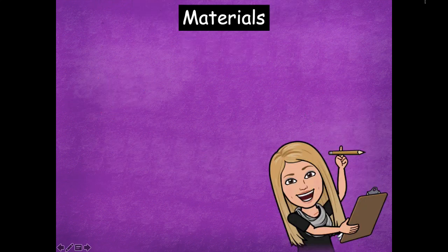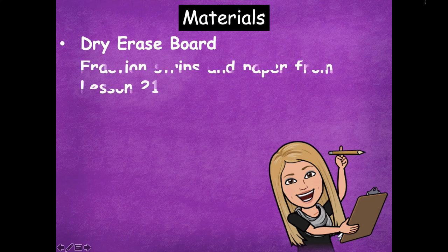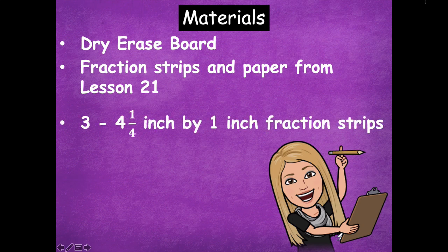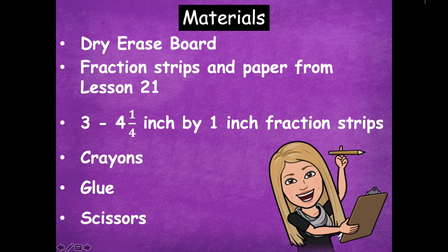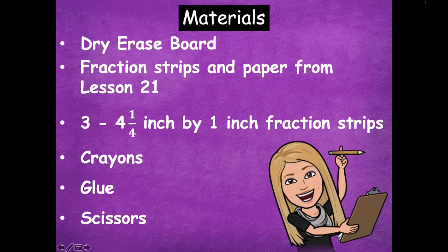The materials you'll need for this lesson are your dry erase board, your fraction strips and paper from lesson 21, our previous lesson, and three additional fraction strips. Make sure they're the same size as the fraction strips from yesterday, which measure four and one-fourth inch by one inch. You'll also need some crayons for shading, some glue, and some scissors. Make sure you have all those materials before we get started.